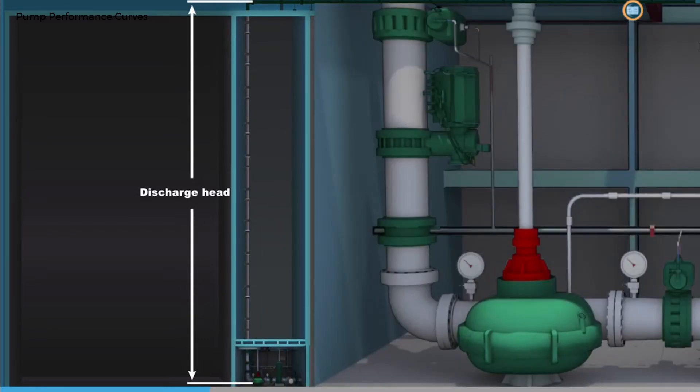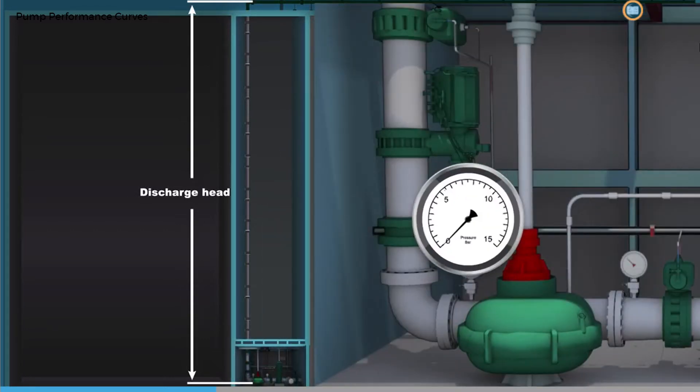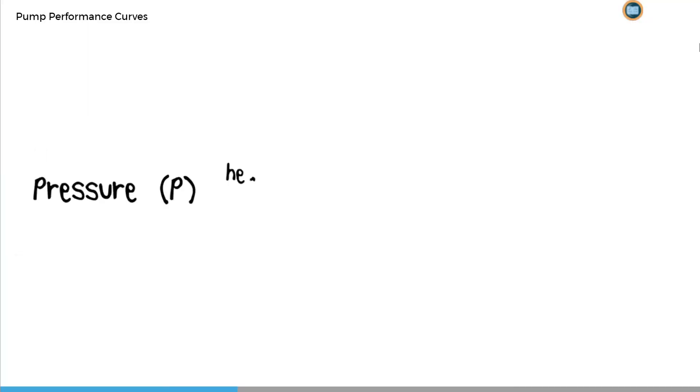This is usually measured in meters, but can be converted to the more familiar unit of pressure known as bar. We do this by multiplying the head by the density of the liquid being pumped, and dividing it by 10,197.